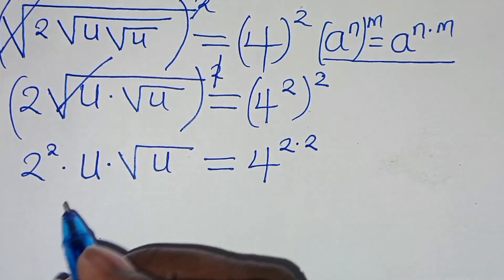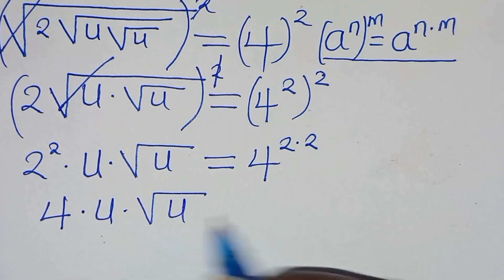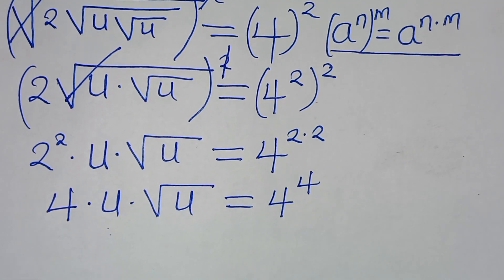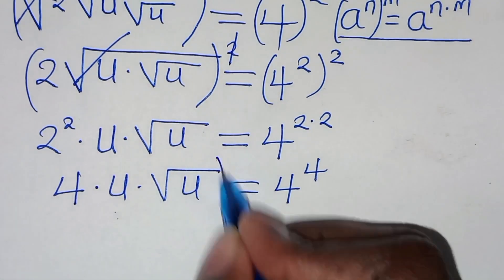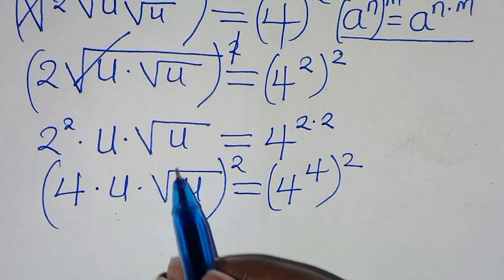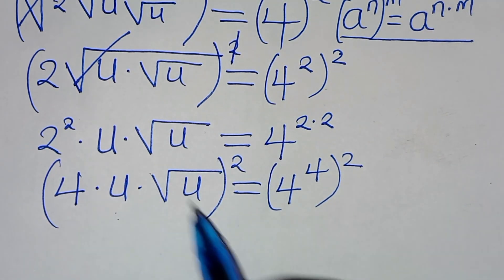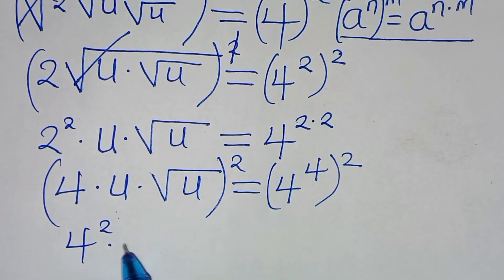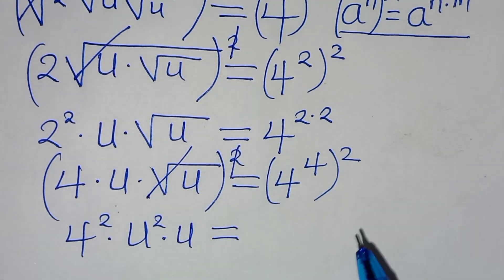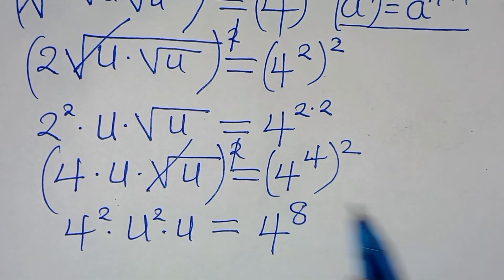This implies we have 2 raised to the power of 2, which is equal to 4, times u multiplied by square root of u. This is equal to 4 raised to the power of 4. Again, here we are going to square both sides so that we eliminate the last square root sign. By squaring, we are going to square all the values in this bracket. So we have 4 squared times u squared, and we eliminate the square root sign, giving times u. This is equal to 4 to the power of 4 times 2, which equals 8.